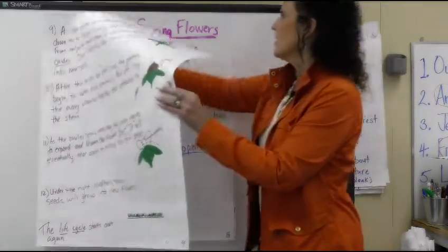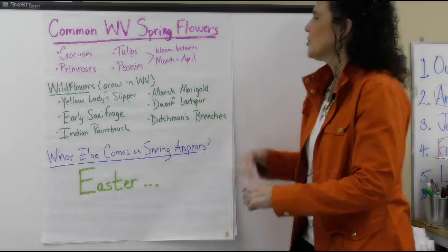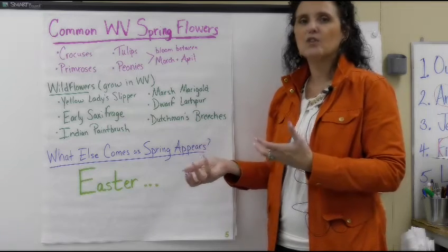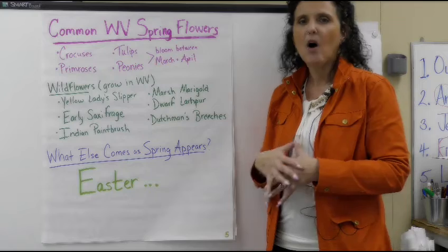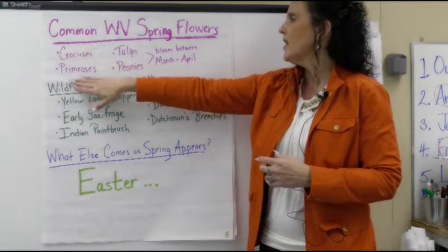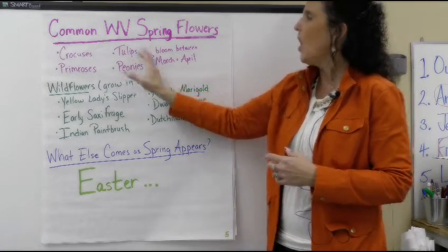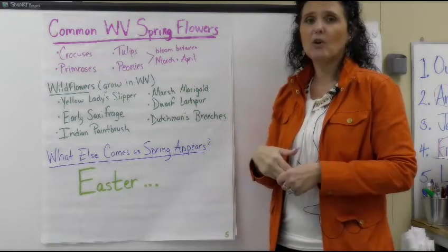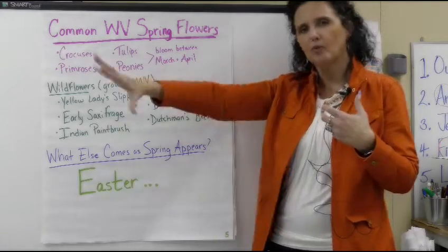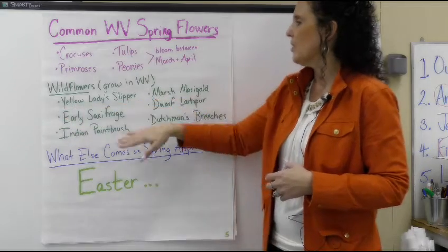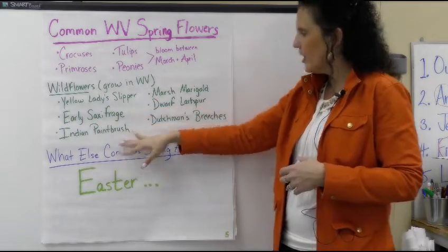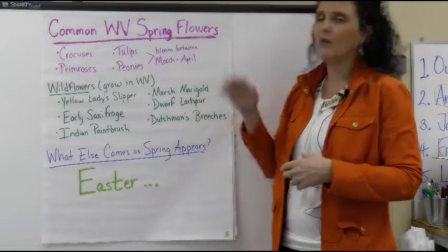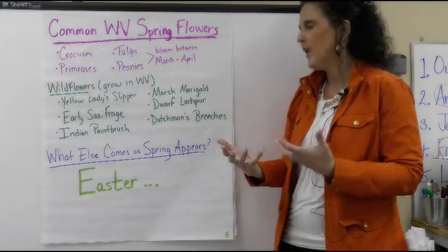We want to look at some common West Virginia spring flowers, and at the end of this video we're going to put up pictures of those. Some of the common ones are crocuses, primroses, tulips, and peonies — all of these will bloom between now and April here in West Virginia. We also have wildflowers like yellow lady slippers, Indian paintbrush, marsh marigold, dwarf larkspur, and Dutchman's breeches. Sometimes you're driving along the interstate and you'll see all those beautiful flowers in the median or along the side.